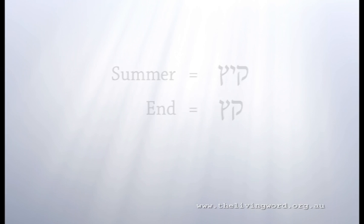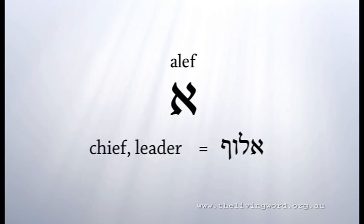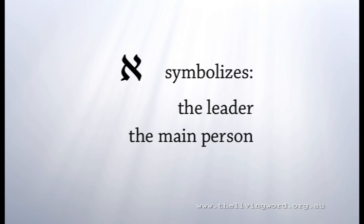When we come to the first letter of the Hebrew alphabet, the pictogram behind this letter is an ox head with horns. Horns in the Bible are a symbol of strength. The name of the letter is Aleph, and Aleph sounds like aloof, which is the Hebrew word for chief or leader. Combining these two ideas — the pictogram and the name of the letter — we see that it symbolizes the leader, the main person.